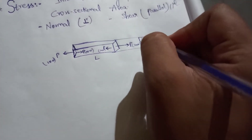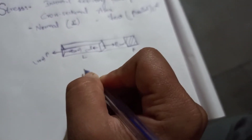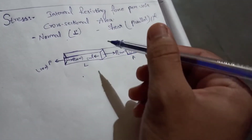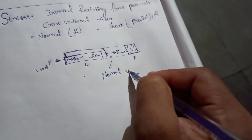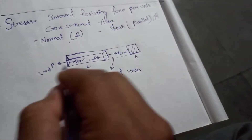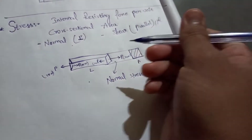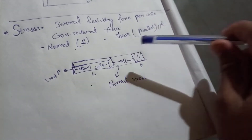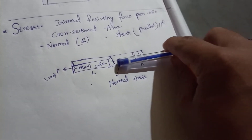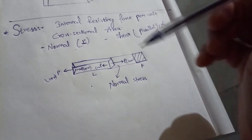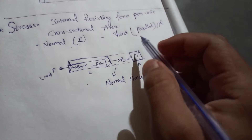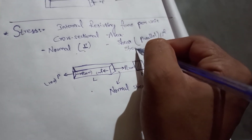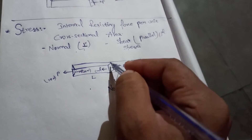The cross-sectional area is A. Now, stress is defined in two types: normal stress and shear stress. Normal stress is the stress which acts perpendicular to the cross-section. If the load is perpendicular to the cross-section of the structural member, the stresses induced are known as normal stress. Shear stresses act along the body.